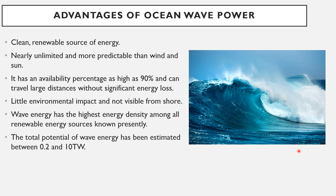High energy density means a very small area can produce very high energy compared to the same area of solar or wind. The total potential of wave energy has been estimated between 0.2 and 10 terawatts — at minimum 0.2 TW from oceans and seas around the world, up to 10 TW.